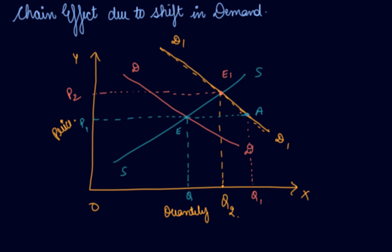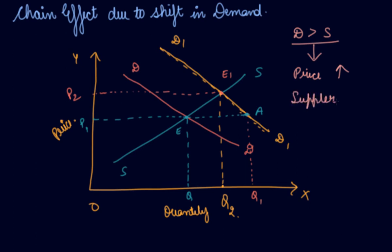When demand increases and affects price, the price rises. According to the law of supply, if price increases, quantity supplied also increases. This is a change in quantity supplied due to price — which is the extension of the supply curve. So the supply curve extends from the original point to a new point.